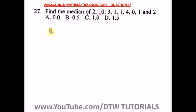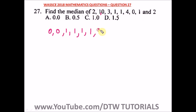Arranging in ascending order: 0, 0, 1, 1, 1, 1 — that's four ones — then 2, 2, 3, 4.